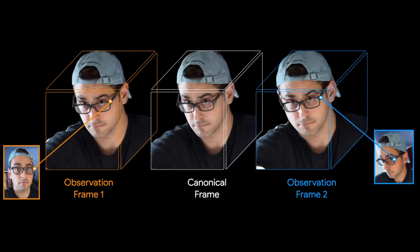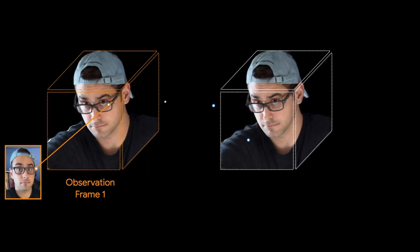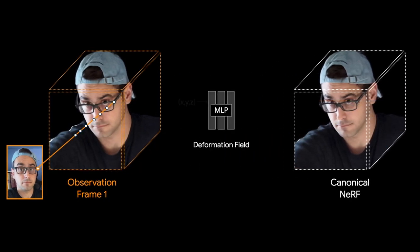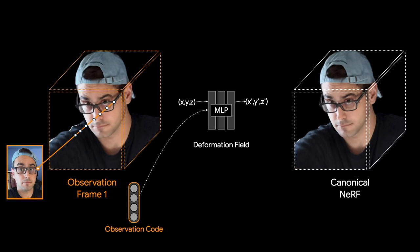Our method solves this by allowing the rays to deform for each observation and intersect on a canonical coordinate frame, which is shared between all observations. This is done using a deformation field, which takes a 3D point x, y, z as input, and outputs a transformed point x prime, y prime, z prime. Similar to the base NeRF model, we use a simple multilayer perceptron, except we additionally provide a latent observation code as input, which allows the network to encode a separate deformation field per observation. Given a group of points along the ray, we can render the scene by sampling the canonical NeRF using the transformed points. Please see the paper for details.